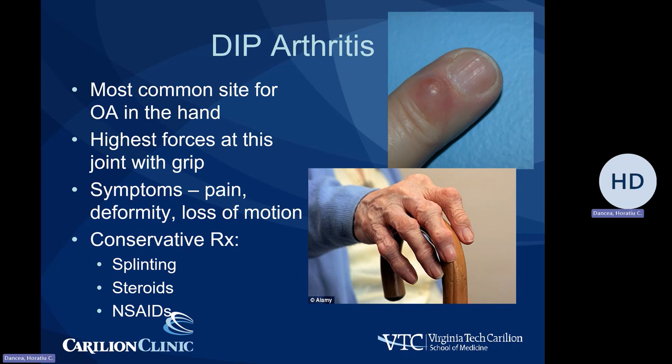Initial treatment is splinting, mostly at nighttime, which is done mostly for comfort, although excessive splinting causes further worsening of stiffness. That is why motion is recommended for any arthritic joint. Also, steroids — either topical or oral — as well as injections and oral NSAIDs are used.